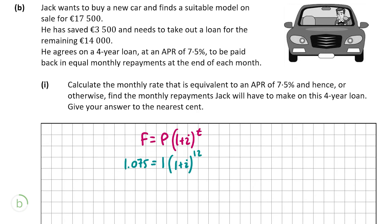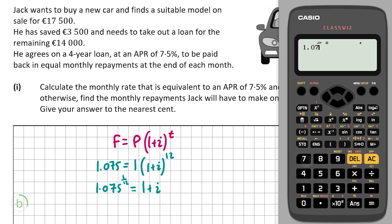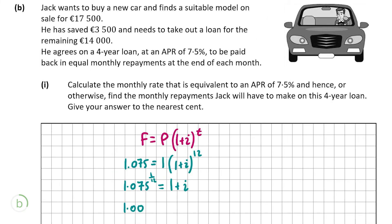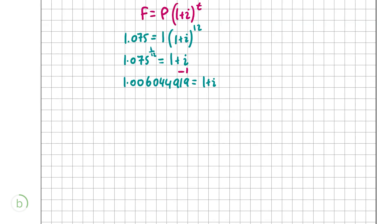To isolate i, we raise both sides to the power of 1/12: 1.075^(1/12) = 1 + i. Calculating 1.075^(1/12) gives 1.006044919, so 1 + i = 1.006044919. Subtracting 1 from both sides: i = 0.006044919. That's the monthly interest rate.